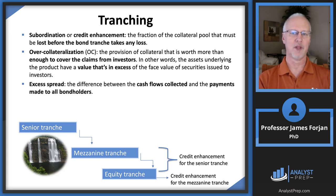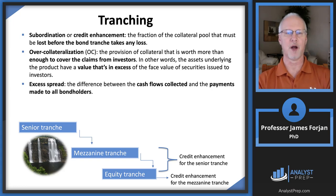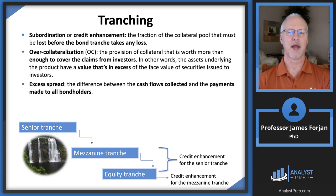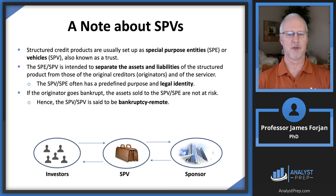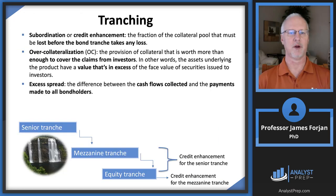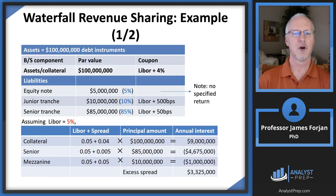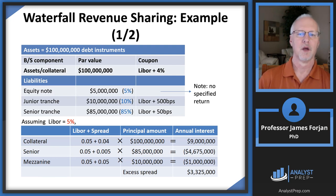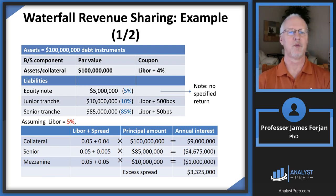Over-collateralization protects senior and junior bondholders by aggregating excess cash flows from the fund. The excess spread is the difference between the cash flows collected from the pool and the payments made to the bondholders. In our example, assets are $100 million par value earning LIBOR plus 4%. The pool is divided into three tranches: senior ($85M, LIBOR + 50 bps), mezzanine ($10M, LIBOR + 500 bps), and equity ($5M, receiving whatever remains).